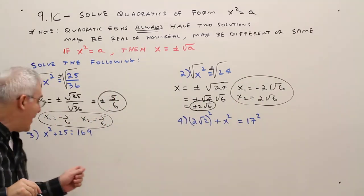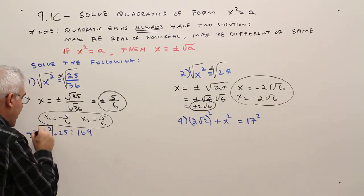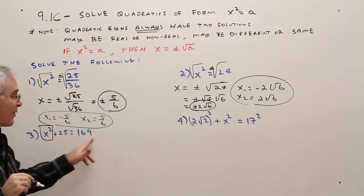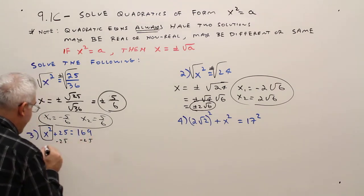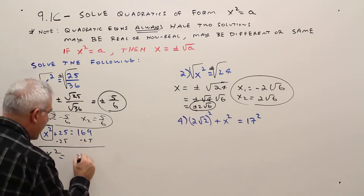Problem 3 is slightly different. I don't have X squared isolated, so what I'm going to do is isolate it by subtracting 25 from each side. So minus 25 here, minus 25 here. I'll get X squared equals 144.